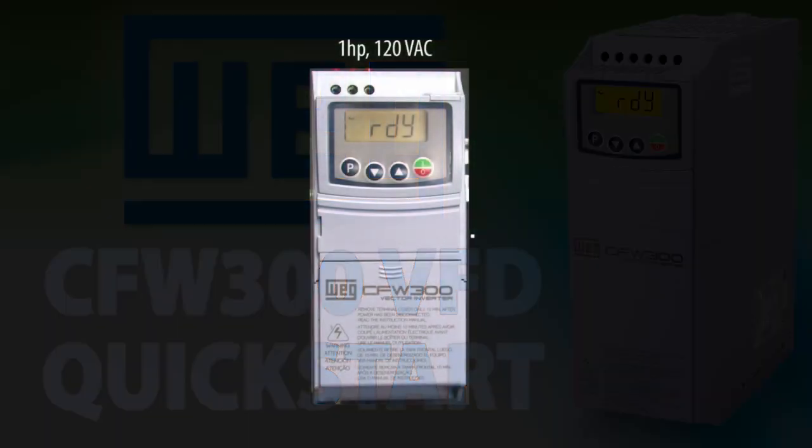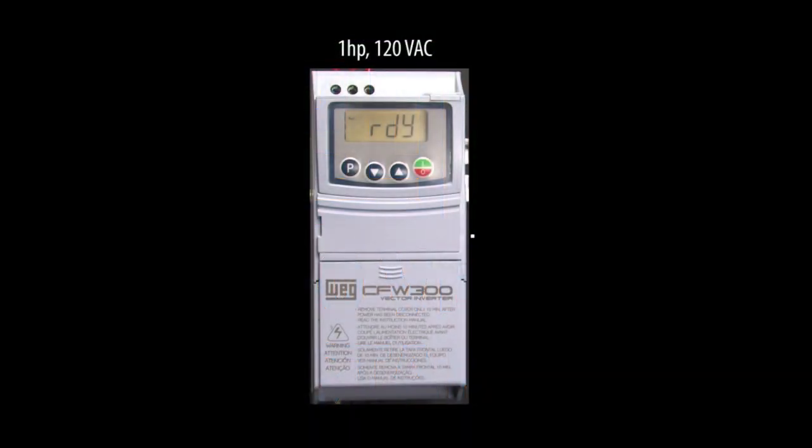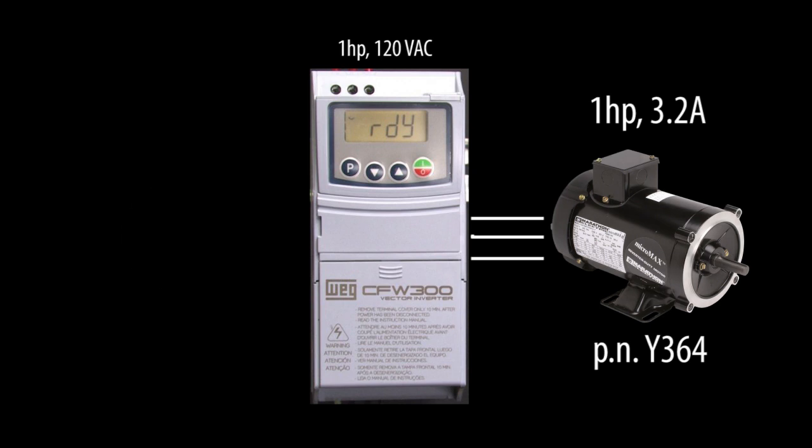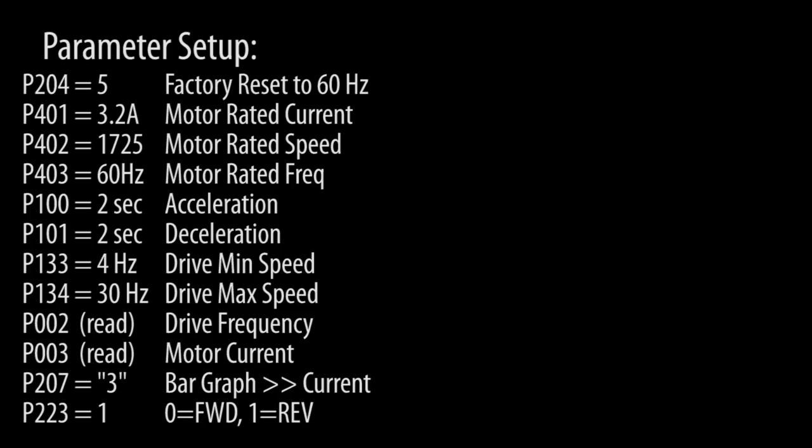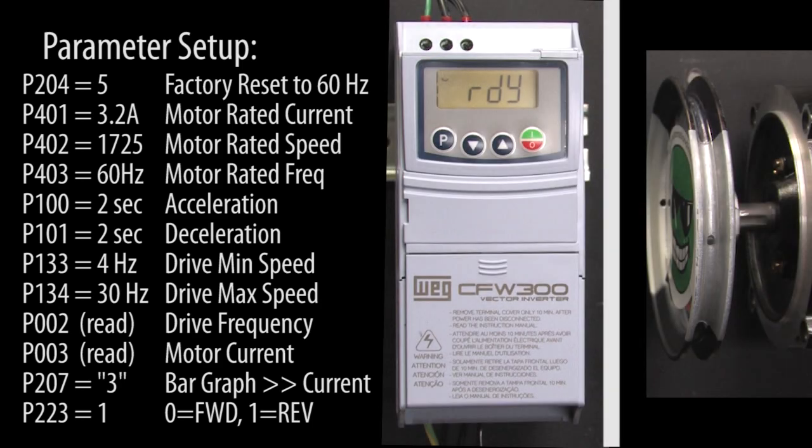In this video, we'll use a 1 horsepower WEG CFW300 drive to control a motor from a single phase 120 volt supply. These are the parameters we're going to set and the values we're going to use in this demo. Let's quickly walk through setting these just so you can get a feel for the flow of entering parameters.